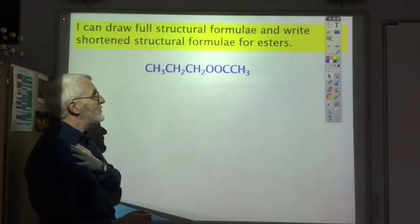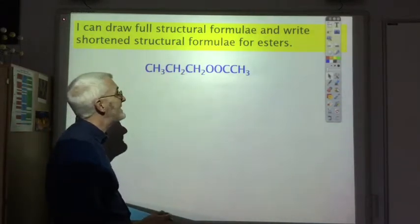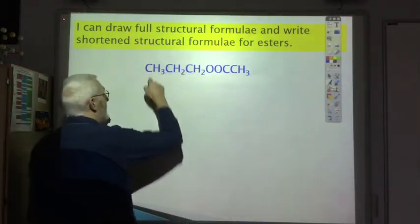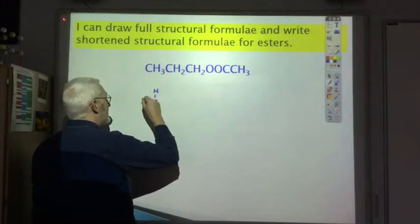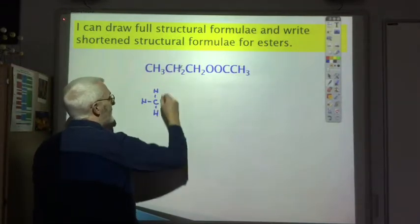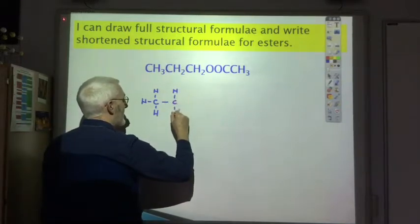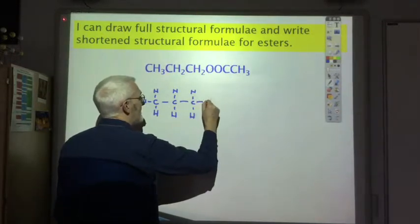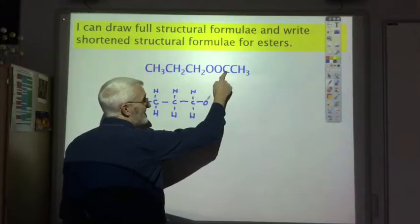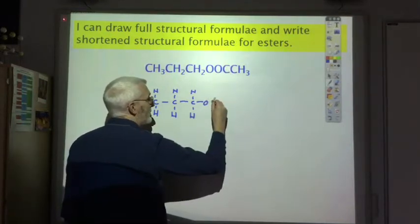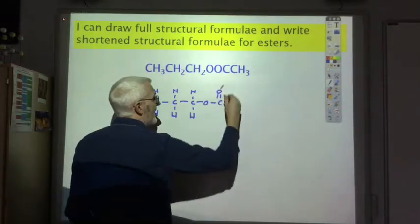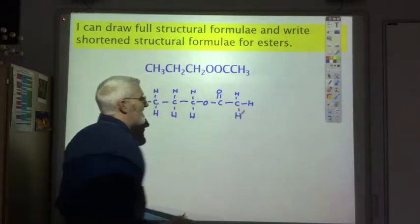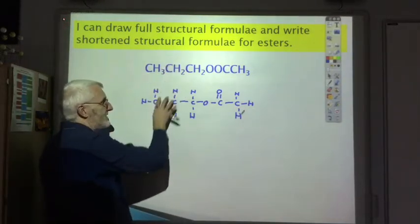Here's another shortened structural formula for an ester — let's convert it to a full structural formula. We have a carbon with three hydrogens, then a carbon with two hydrogens, then another carbon with two hydrogens, then an oxygen, and then this oxygen is right up against a carbon, so this is the C=O. Then a carbon with three hydrogens. Make sure you can convert between shortened and full structural formulas.